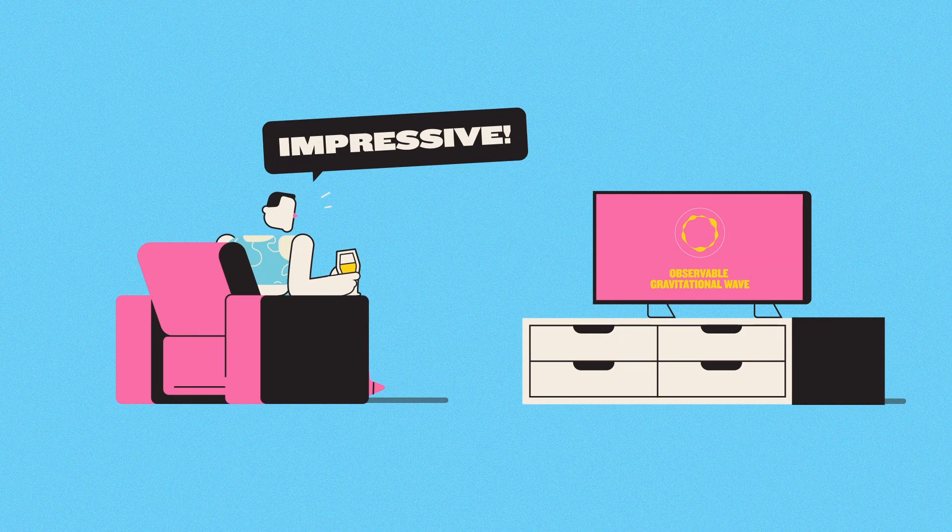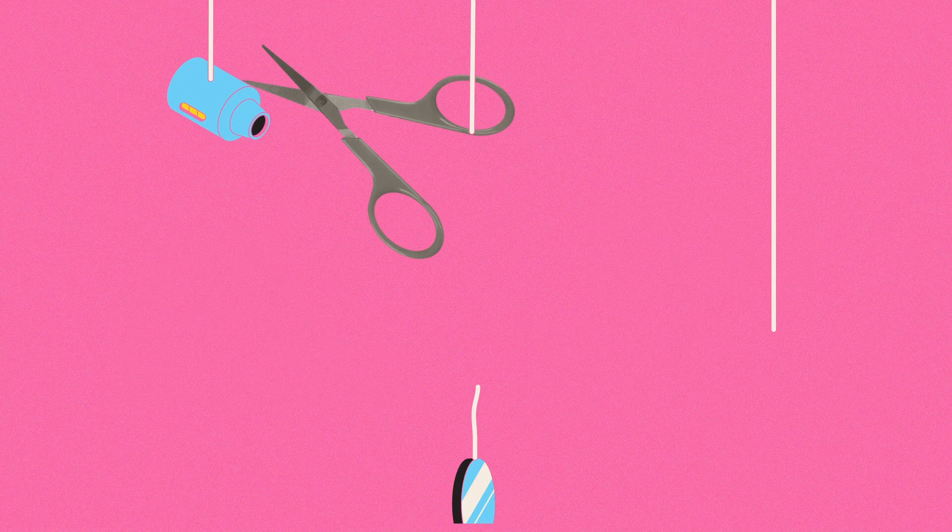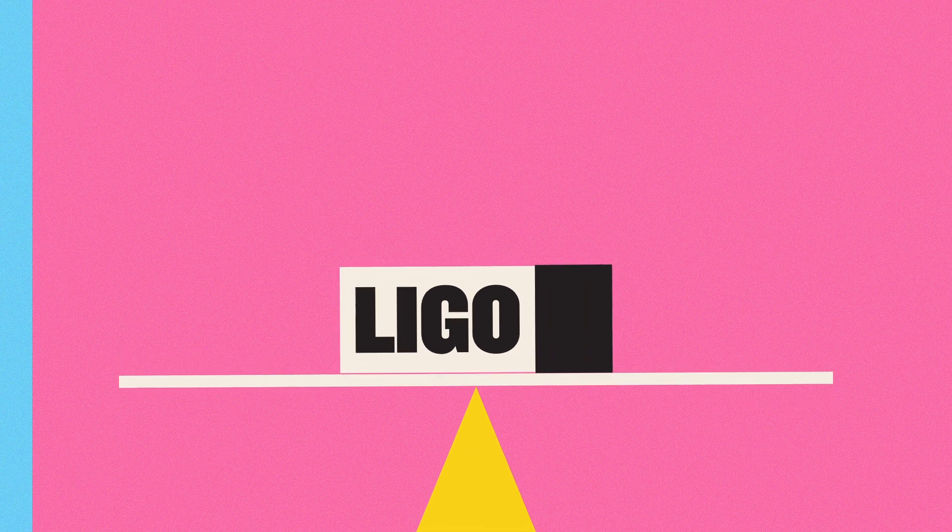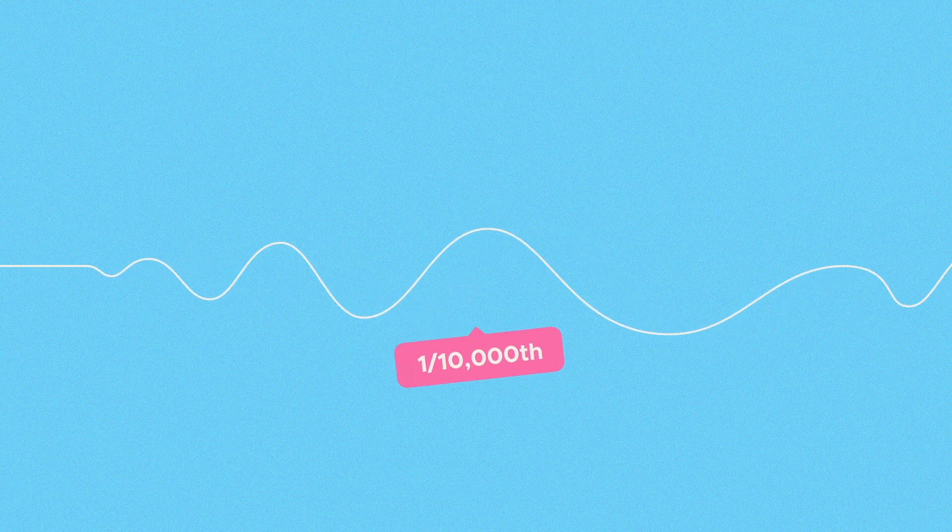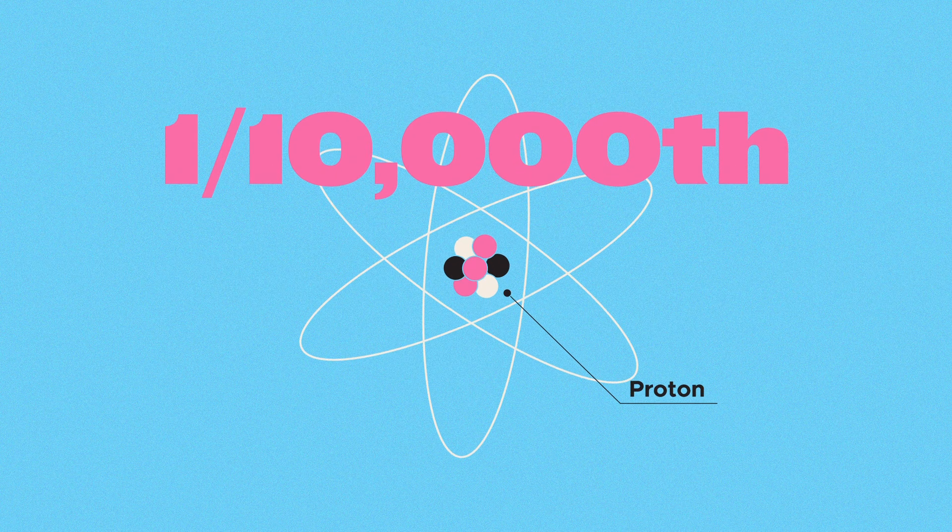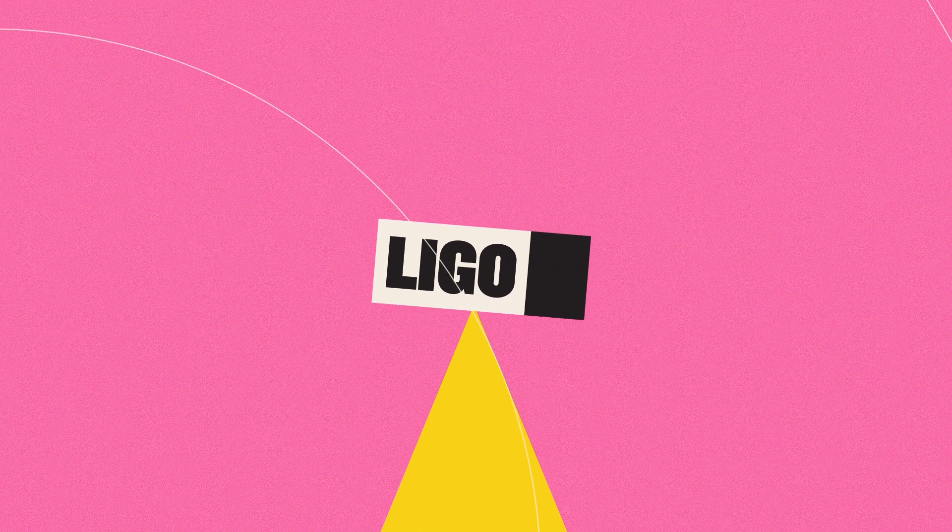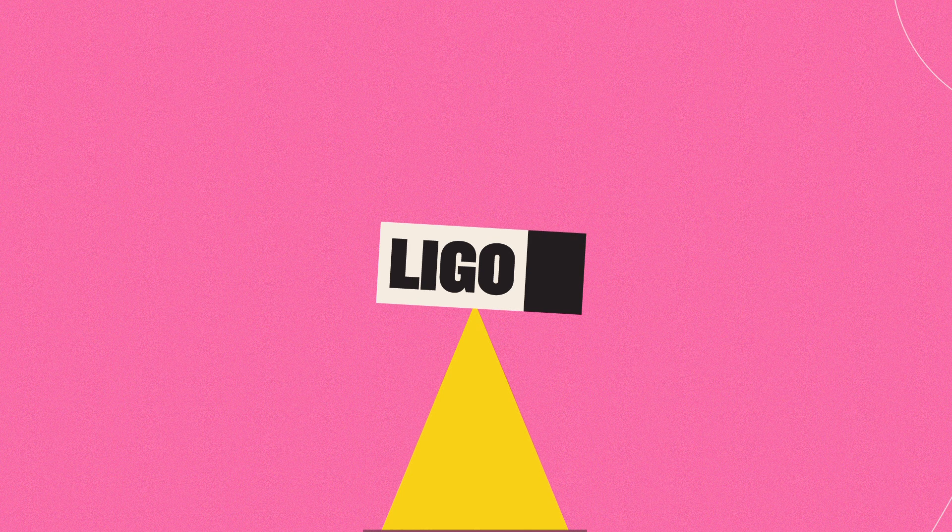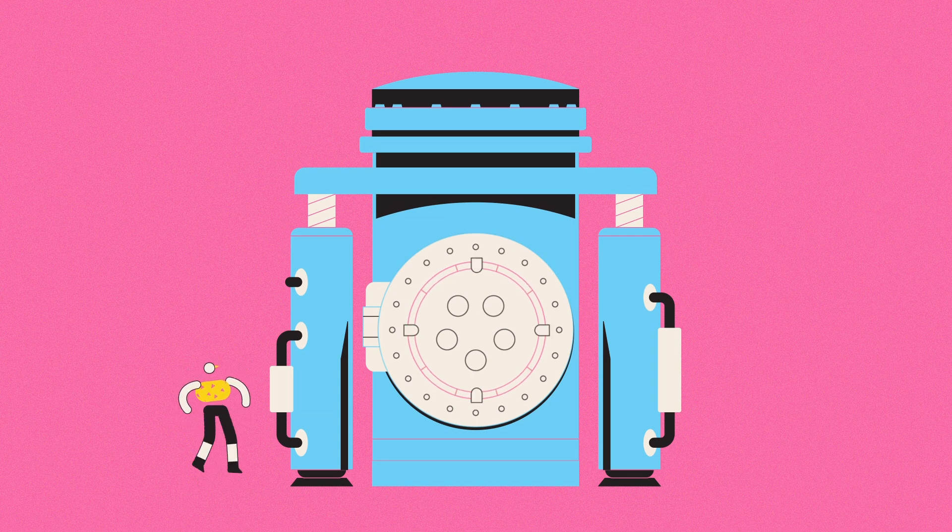If this wasn't impressive enough already, there's a twist. The sensitivity required to measure such tiny disruptions makes LIGO's greatest strength also its greatest weakness. The disturbance caused by a gravitational wave can be around one ten-thousandth the width of a proton. And any system that sensitive is going to suffer from background noise.